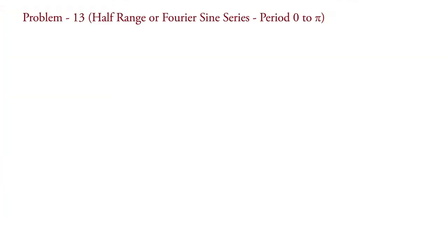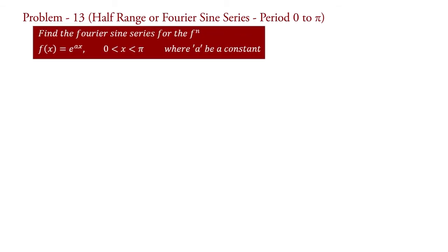Problem 1: half-range series. Find the Fourier sine series for the function f(x) = e^(ax) for 0 less than x less than pi, where a is a constant.